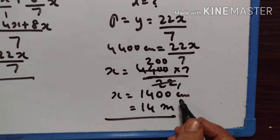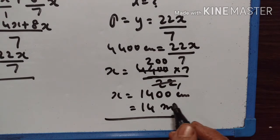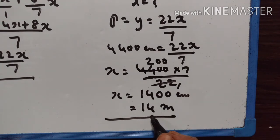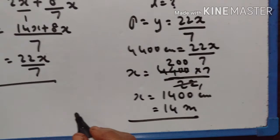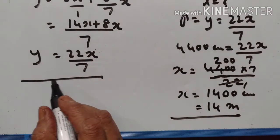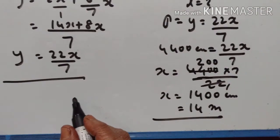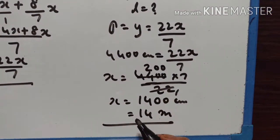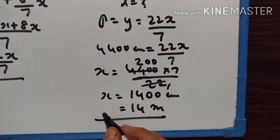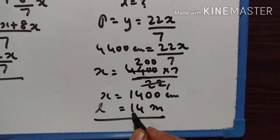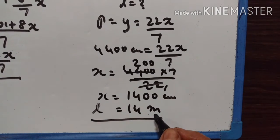1 meter is equal to 100 cm. Therefore, 1400 cm is equal to 14 meters. So, y is equal to 22x upon 7 is the equation, and the length of this rectangle is equal to 14 meters.